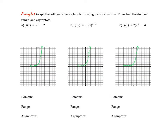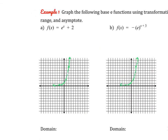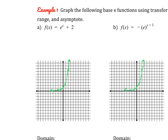Now we're going to start by graphing the following base-E functions using our transformation rules. I've already sketched out the parent function from the warm-up for each of these, so we can go in and start by looking straight for the transformations. In this first one, we can see that it is the base-E function, but then we see that plus 2 at the end. Since it's added and it's not added to x, we know that this is a vertical shift, which will move our graph up 2.